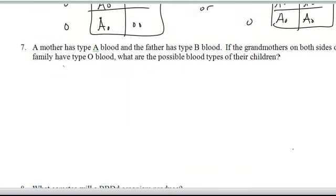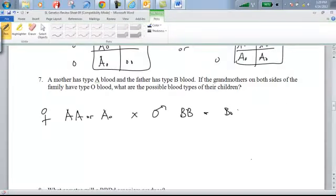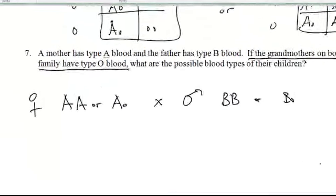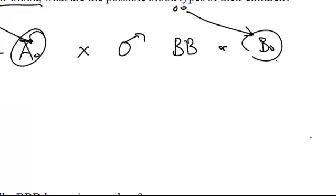Let's look at number seven here. Mother has type A blood, so here's mom. She's going to be either AA or AO in her genotype. Dad, father has type B blood. So similarly, he's going to have homozygous for B or potentially he'd be heterozygous for B. But now this next sentence here gives us a clue about what particular genotype they must be. If the grandmothers on both sides of the family have type O blood, so that means his mom was type OO and her mom was type OO, that means their moms only had a little O allele to give to them. So that must mean that both of these particular parents would be the heterozygous condition for type A and type B.